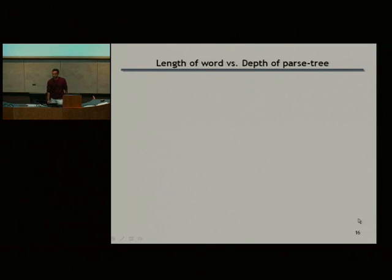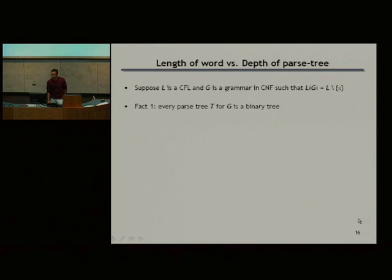Suppose I have a language with a grammar in Chomsky normal form. I have a grammar for this language, except maybe the empty string, and that grammar is in Chomsky normal form. Because it's Chomsky normal form, every parse tree is a binary tree. Every variable generates at most either a terminal or two non-terminals.